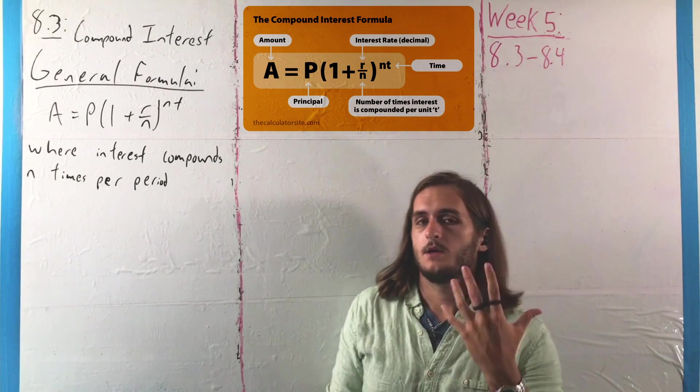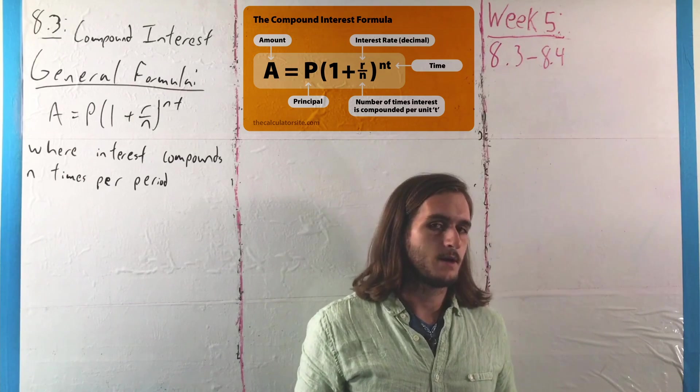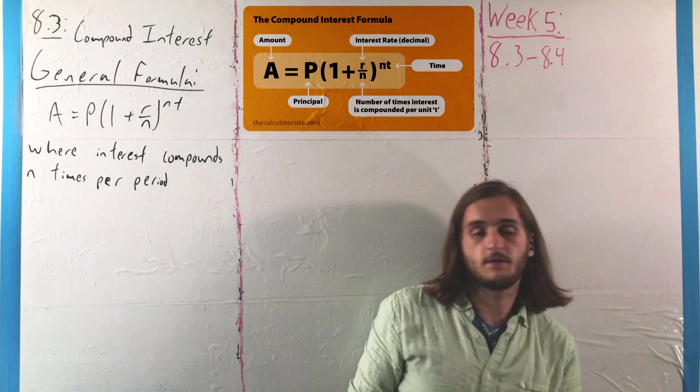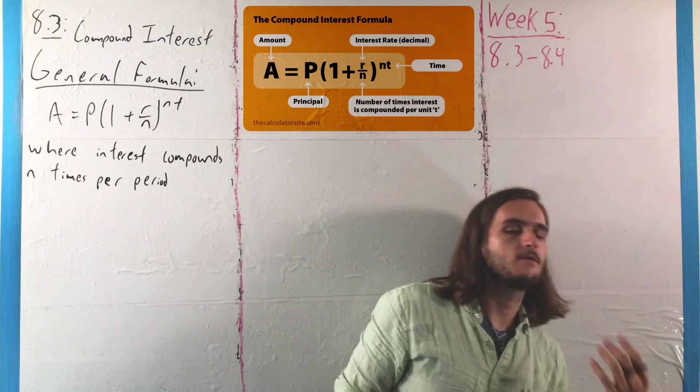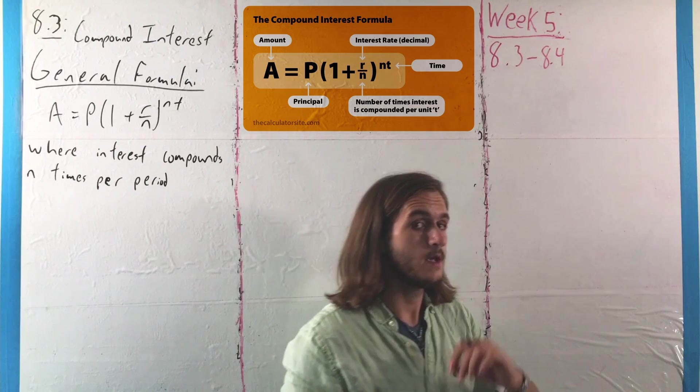We can talk about something being semi-annual in terms of its compounding rate, that is, it does so twice per year, or quarterly if it does it four times per year, or monthly for 12 times, or weekly for 52, and so on, which is something we'll talk about in a little bit.